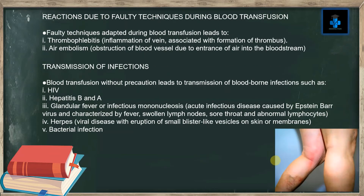Faulty techniques adopted during blood transfusion lead to: number one, thrombophlebitis — inflammation of a vein associated with formation of a thrombus; and number two, air embolism — obstruction of a blood vessel due to entrance of air into the bloodstream.